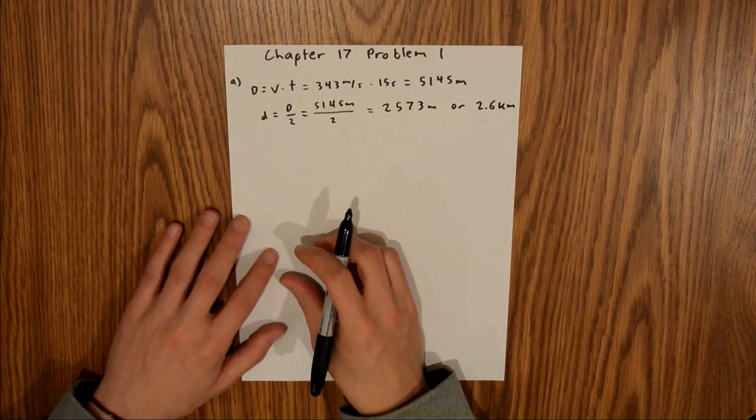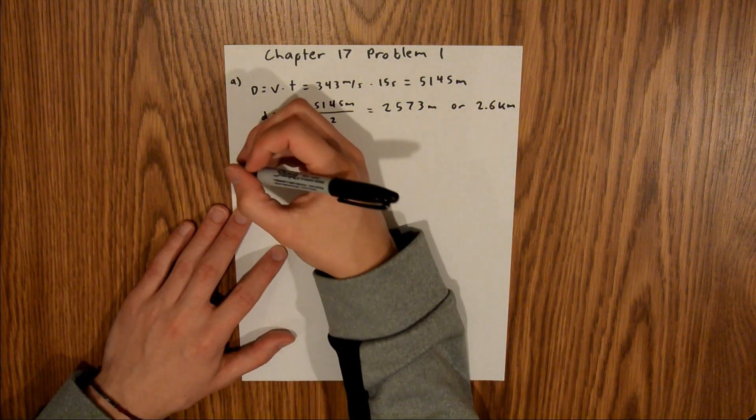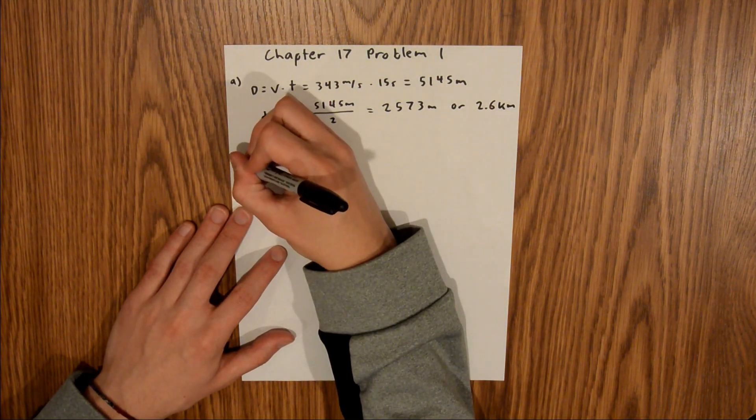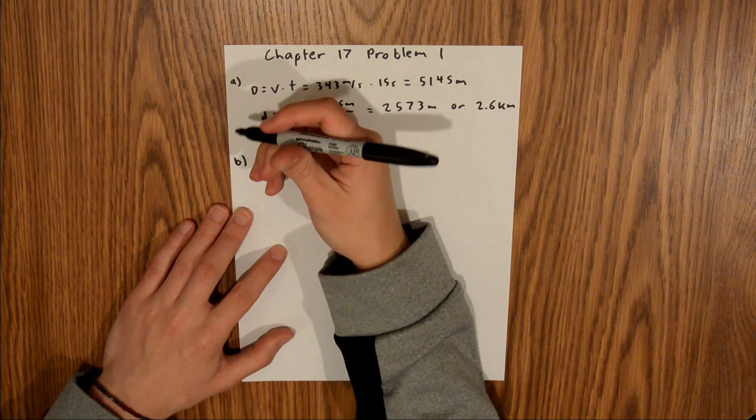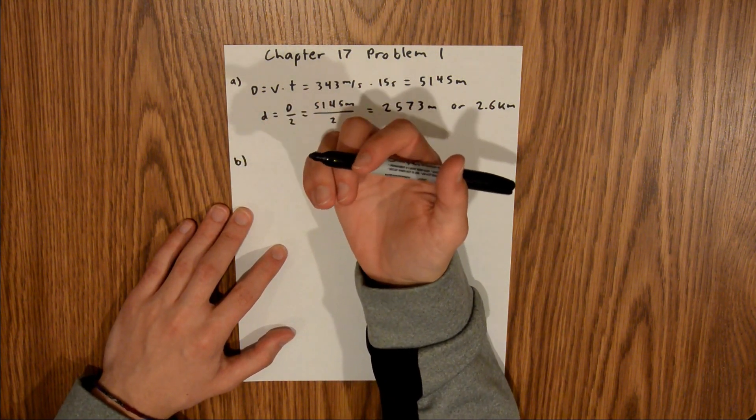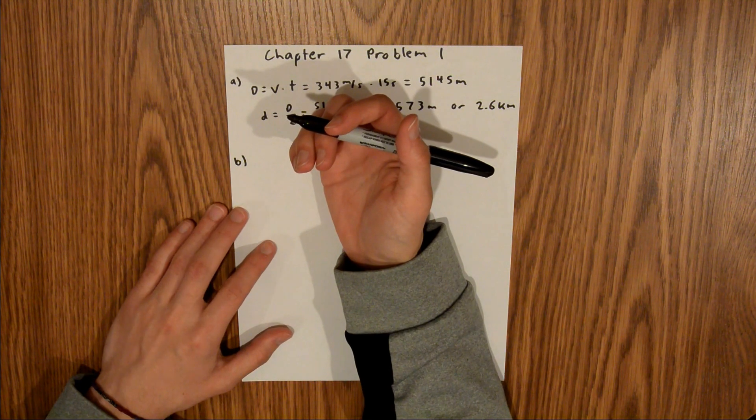That's it for part A. For part B, we are asked to find how many times the wave is reflected off the wall if it is a given distance away.